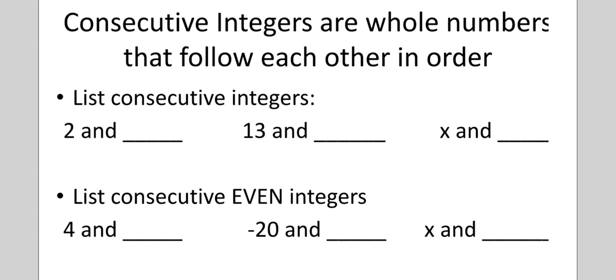Consecutive integers: two, the next number after that is three. Thirteen and fourteen. X and X plus one.